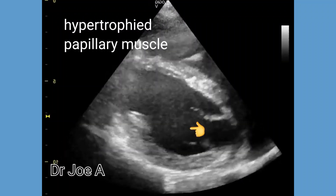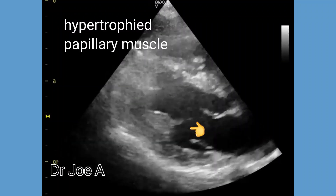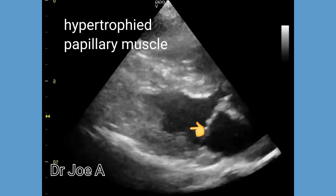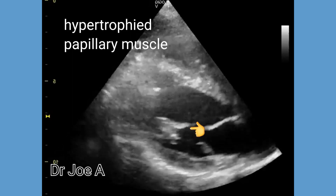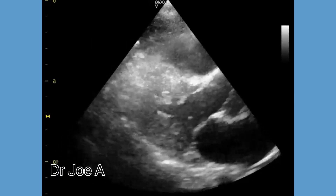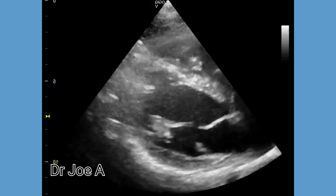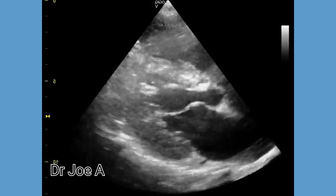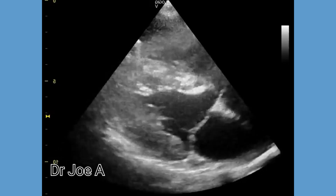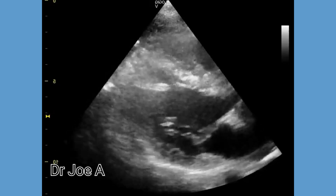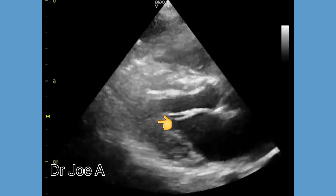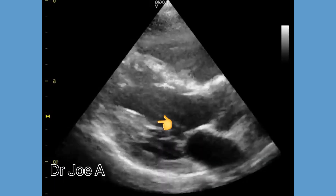There are two papillary muscles in the left ventricle. In this patient, the posteromedial papillary muscle appears to be very prominent — this is what is known as a hypertrophied papillary muscle. The mitral valve leaflets of the left ventricle are attached to the papillary muscles via the chordae tendineae. The chordae tendineae and the papillary muscles prevent eversion of the mitral valve leaflets during systole.